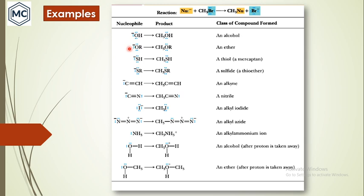In this slide I am giving many examples of nucleophilic substitution reaction. Here is methylbromide — any nucleophile can substitute and form a corresponding product. A variety of nucleophiles can be used and the products formed include: alcohol, ether, thiol, sulfide, alkyne, nitrile, alkyl iodide, alkyl azide, and alkyl ammonium ion. So a variety of classes of molecules can be made from this reaction, which is why it is a very important organic reaction.